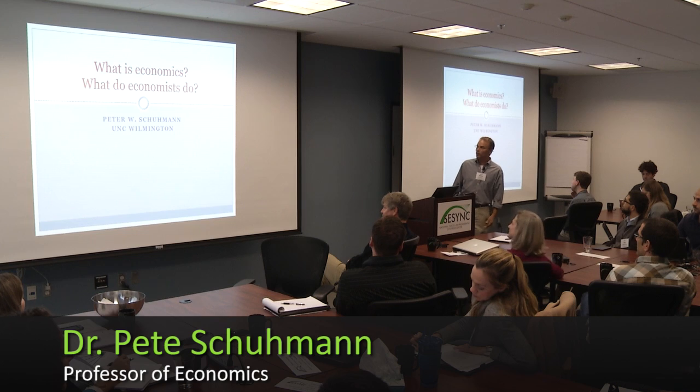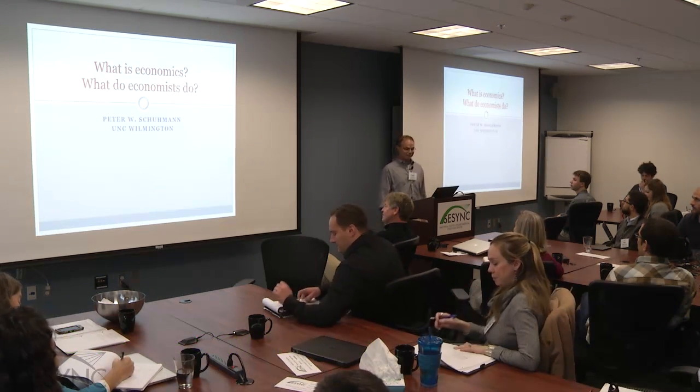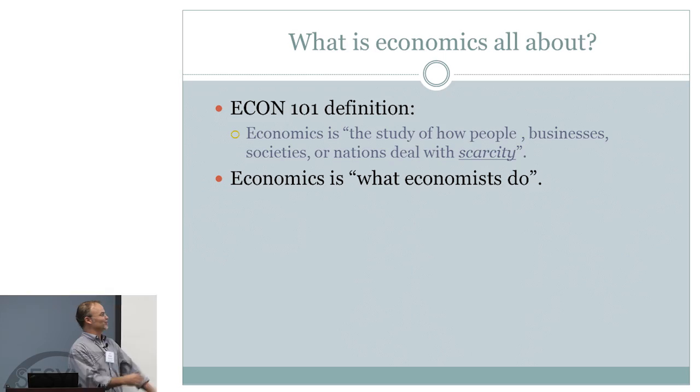I have been given the task of talking about what is economics and what do economists do — Econ 101, the first five minutes of Econ 101. So, there's the Econ 101 definition: economics is the study of how people, businesses, societies, or nations deal with scarcity. There are lots of definitions of economics. If you ask ten different economists what they do, they'd give you ten different answers. My favorite definition of economics is: economics is what economists do.